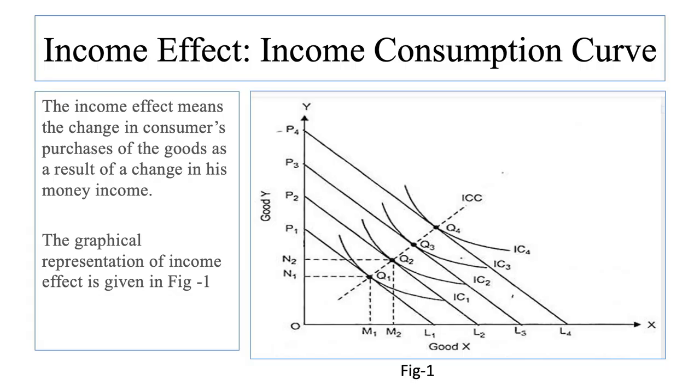Hello students, my name is Dr. Priya Mahajan. In this session we will study the income consumption curve and Engel curve. First we will study the income consumption curve. With a given money income to spend on goods, given prices of two goods, and given an indifference map, the consumer will be in equilibrium at a point in an indifference map. We are now interested in knowing the reaction of the consumer in regard to his purchases of the goods when only his money income changes, but the prices of goods and his taste and preferences remain constant. Income effect shows this reaction of the consumer.